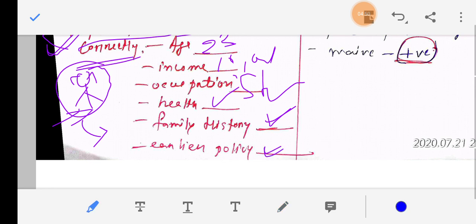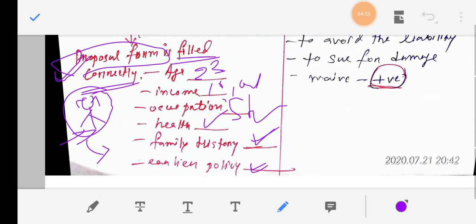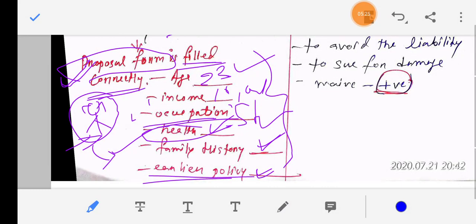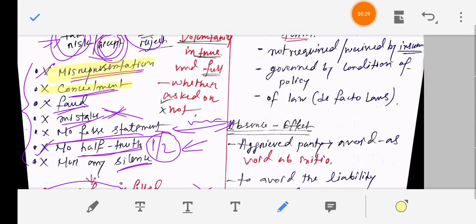For example, income must be correctly stated. Occupation, health status, any medical condition, family history, family background, health conditions should be disclosed because this is hereditary. If you don't disclose properly, the insurance company can deny the claim or assess higher risk and charge higher premium. Income, occupation, health details - all are important. These help the insurance company decide whether to accept the proposal or not, whether to issue the insurance policy to the policyholder.